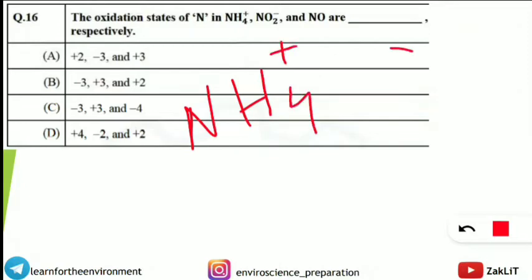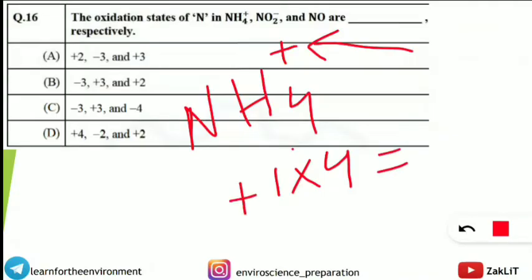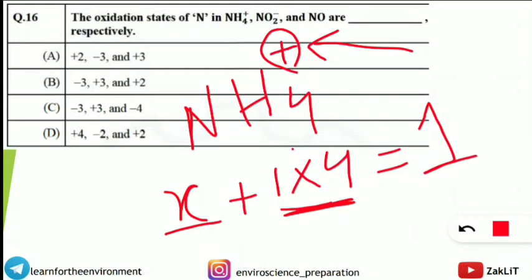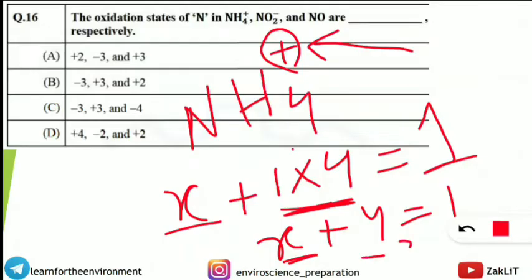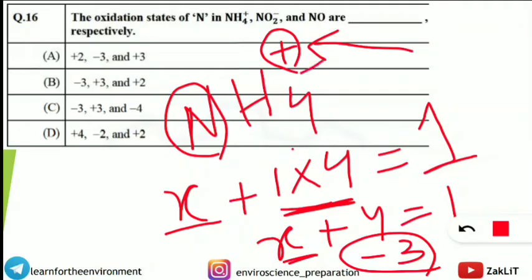For the first case, NH4+: the '+' symbol is the overall charge. Hydrogen's oxidation state is +1, and there are 4 hydrogen atoms. Taking nitrogen's oxidation state as X, we write: X + (1 × 4) = +1 (the overall charge). Solving: X + 4 = 1, so X = -3. The oxidation state of nitrogen in NH4+ is -3.